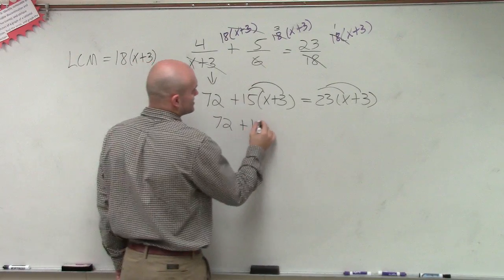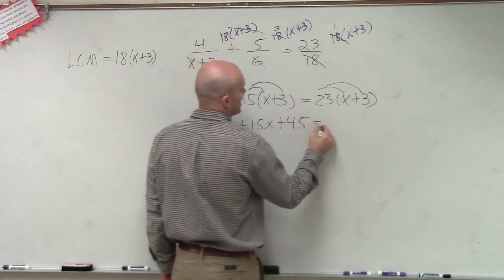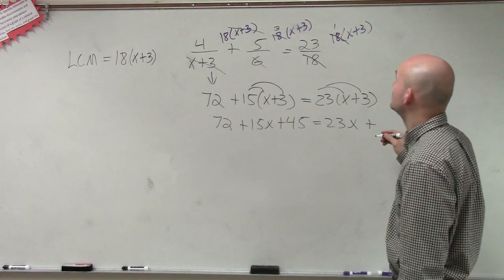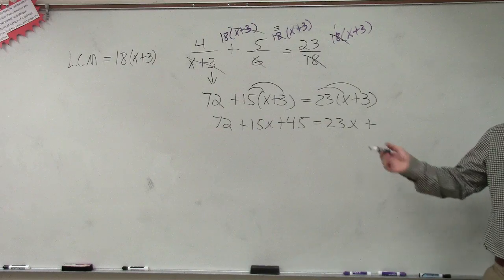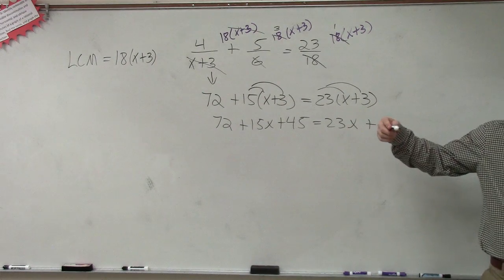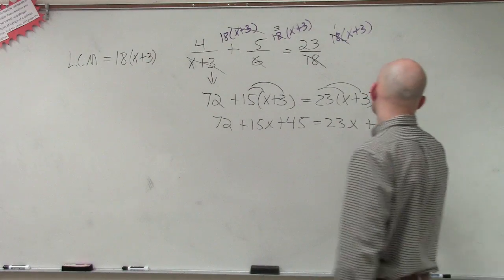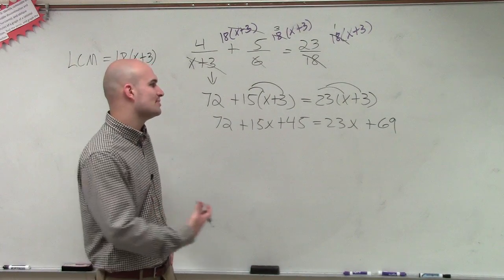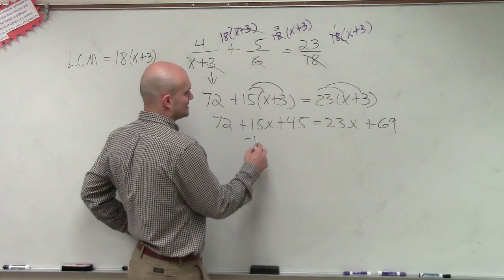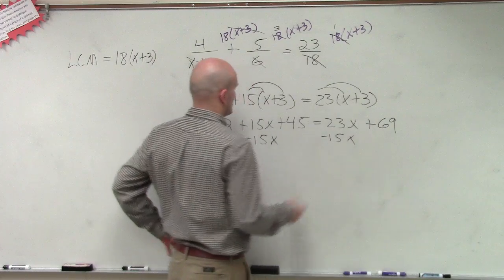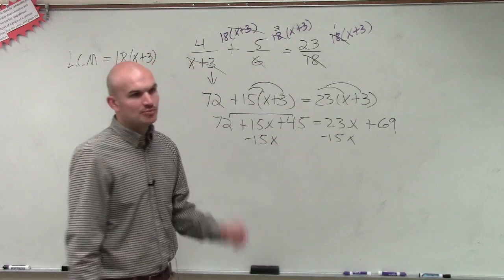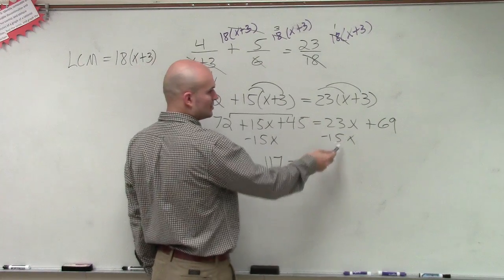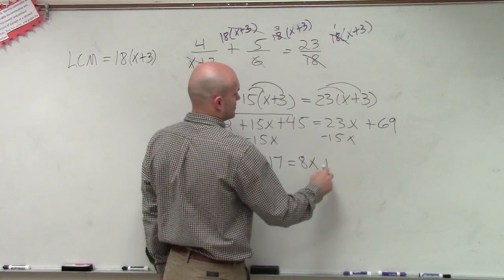So, therefore, I have 72 plus 15x plus 45 equals 23x plus 69. Times 2 would be 46, and now doing times 3 would be 69. So, now, all I need to do is simply get all my terms onto the same side. So, I'll get my x's to the same side, and then I can combine 72 plus 45, which is going to give me a 117. So, I have 117 equals, this is going to be 8x plus 69.